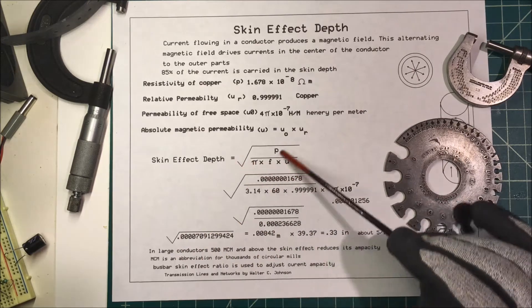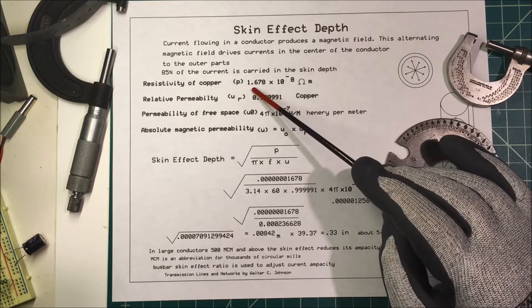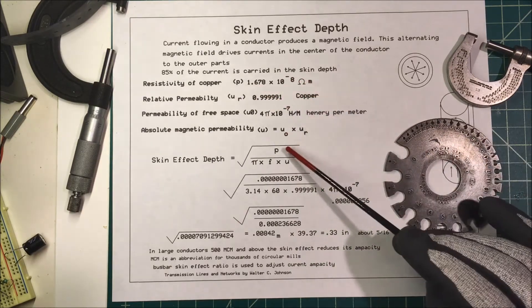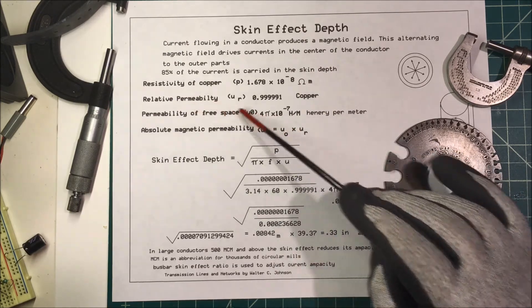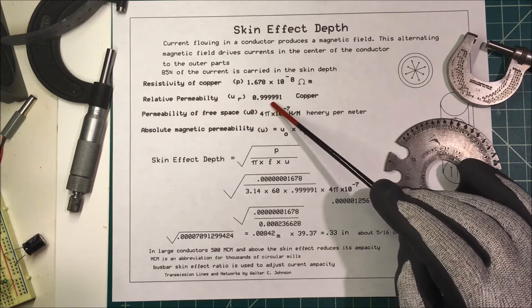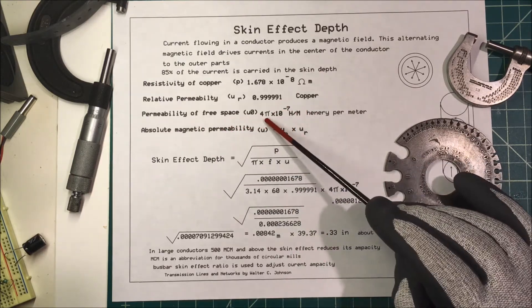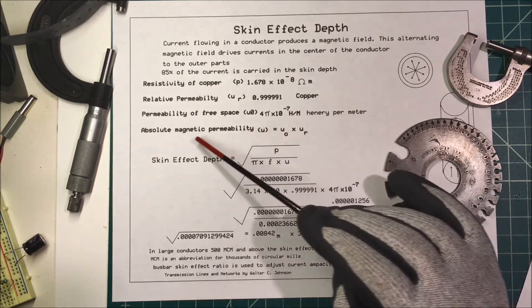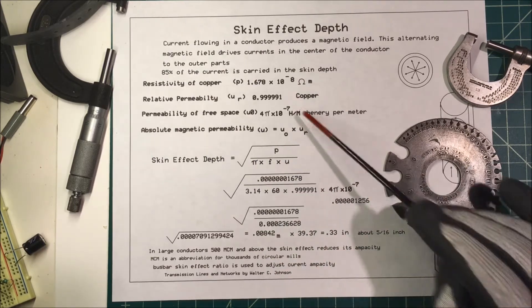We use this formula here. This ρ is for the resistivity of copper and that's 1.68 times 10 to the minus 8 ohms per meter. The relative permeability of copper is 0.99991 and the permeability of free space is 4π times 10 to the minus 7, in Henry's per meter. The absolute magnetic permeability is just these two multiplied together.